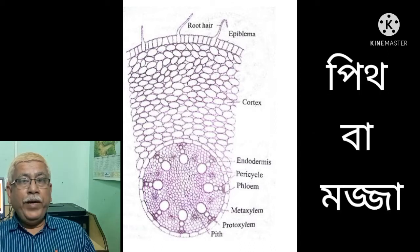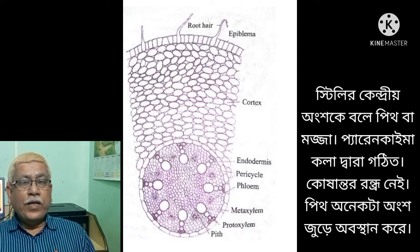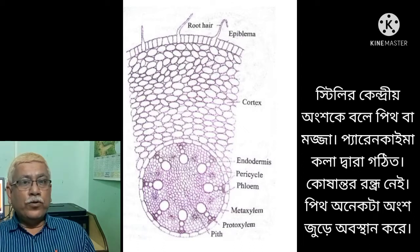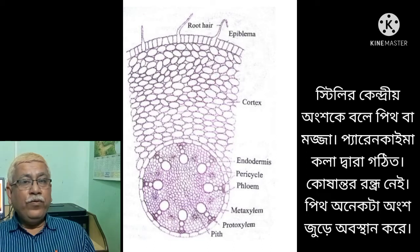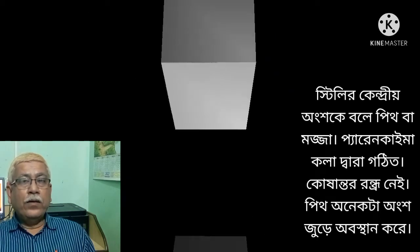Third, pith — it occupies the central portion of the stele. It is composed of loosely arranged parenchyma cells without intercellular spaces. The pith is fairly large.